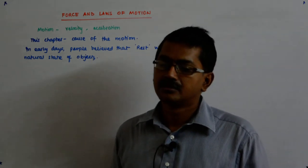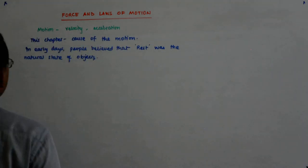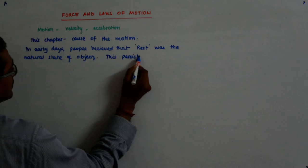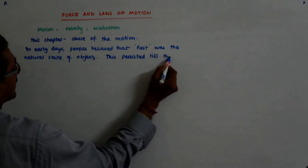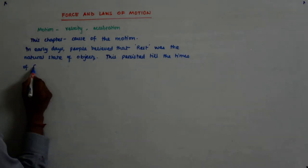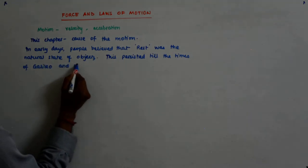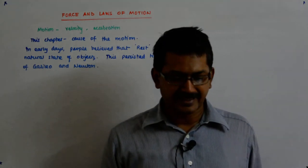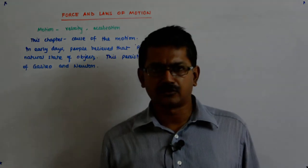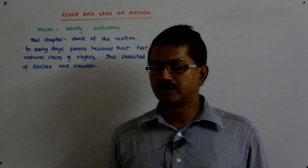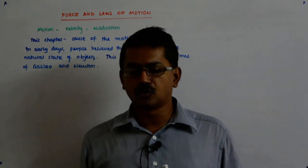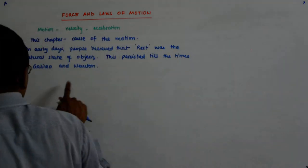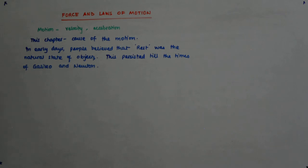That is how scientists thought about motion — till the point that Galileo and Newton started thinking about it. This belief persisted till the times of Galileo and Newton. We'll soon discuss what they said and what was their conclusion. But this was the normal thought: that rest is the natural state of objects, so they actually want to go to that state. Once these two scientists started thinking, things changed.